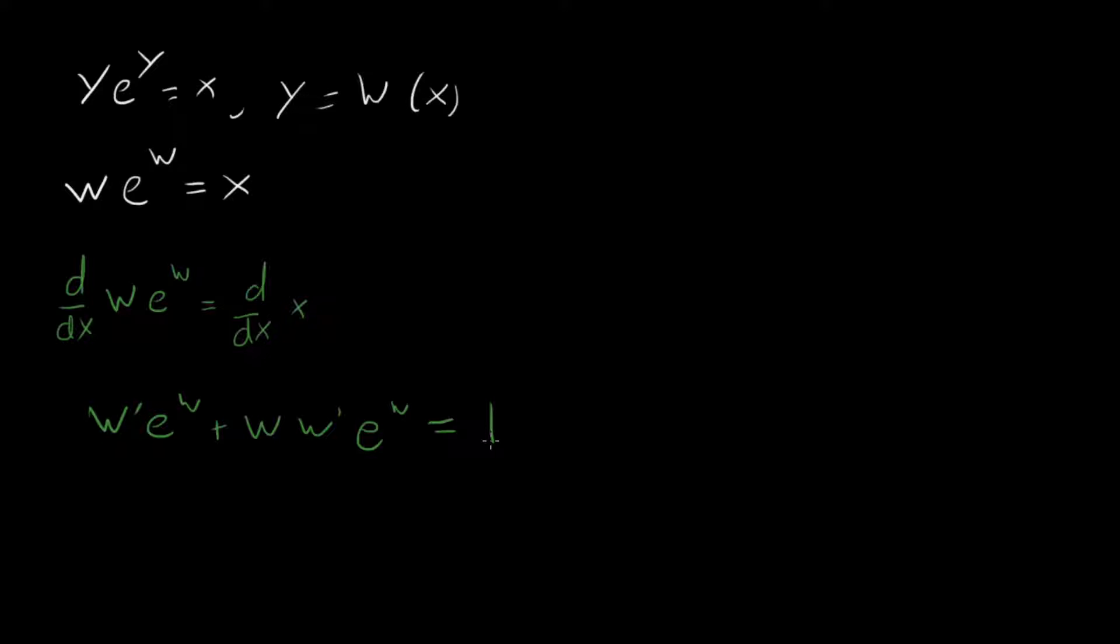This is looking good. So what can we do? We can isolate w'. So we have w' is equal to, actually I'll pull it out first. We have w' times e^w times the quantity (1 + w) equals one. And we can actually do something nice here because this e^w is equal to x divided by w. And I'll write that right here. So this is w' times (x/w)(1 + w) equals one.